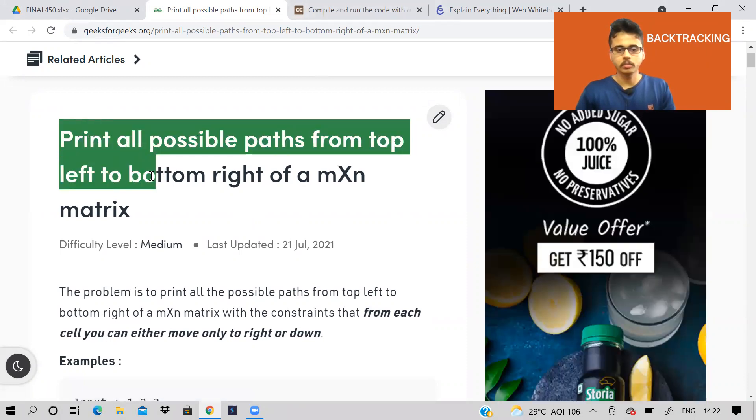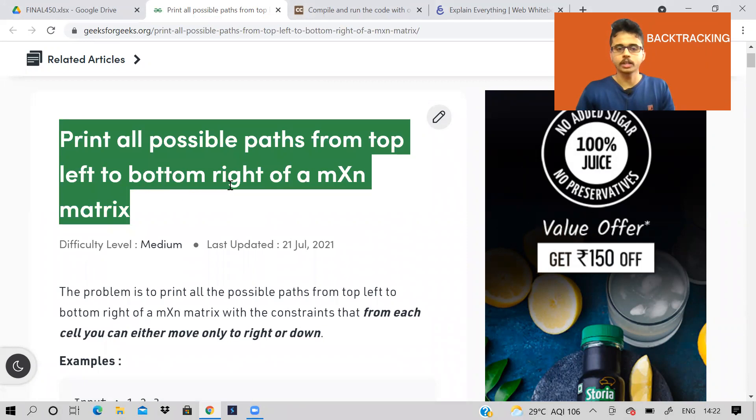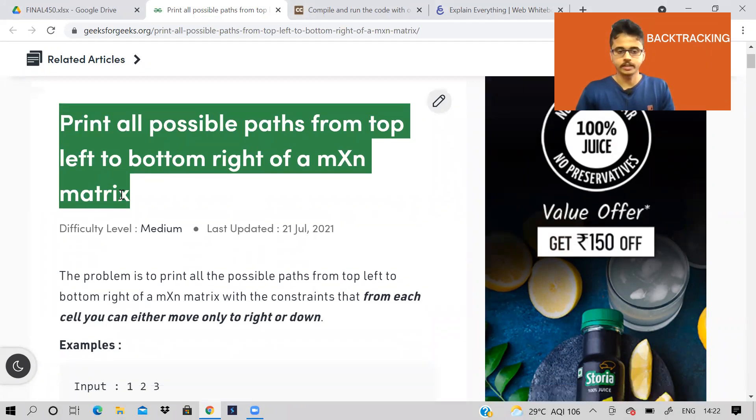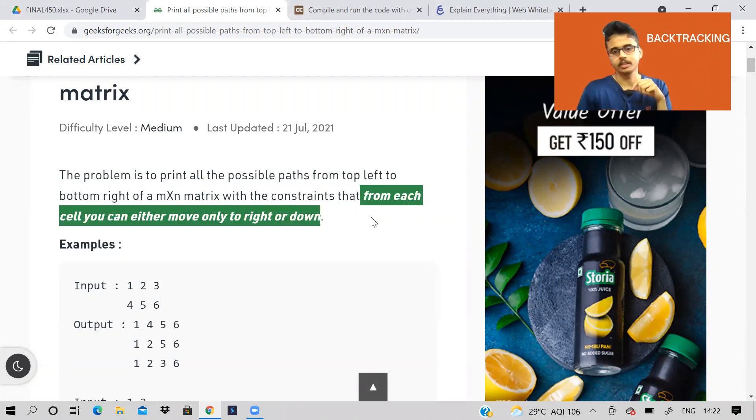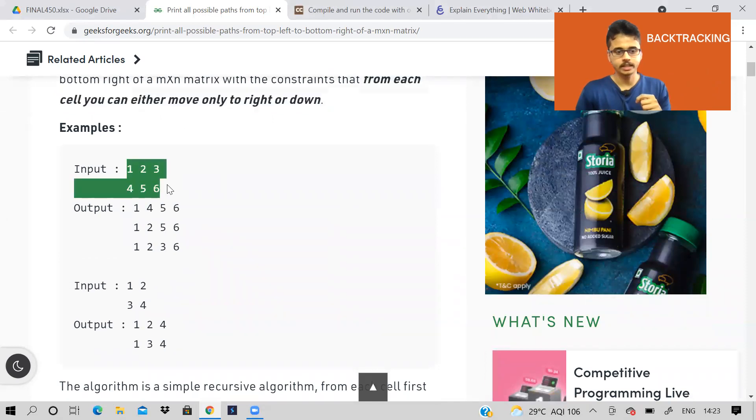So let's read the problem: print all possible paths from top left to bottom right of M cross N matrix. The problem is simple. From the top left cell, we need to reach the bottom right cell of a matrix of size M cross N, M rows and N columns. For example, see, consider this.